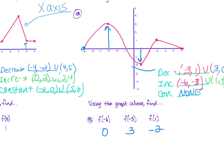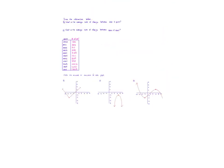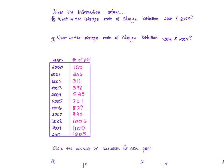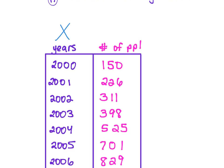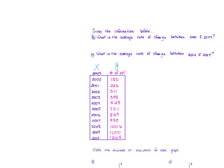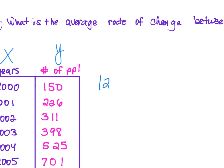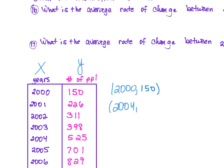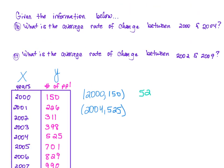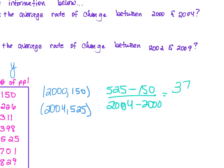Those are super easy. For average rate of change given a table, the x value represents years and y represents number of people. Average rate of change between 2000 and 2004: population in 2000 is 150, in 2004 is 525. So 525 minus 150 over 2004 minus 2000 equals 375 over 4. That's your average rate of change over that interval.